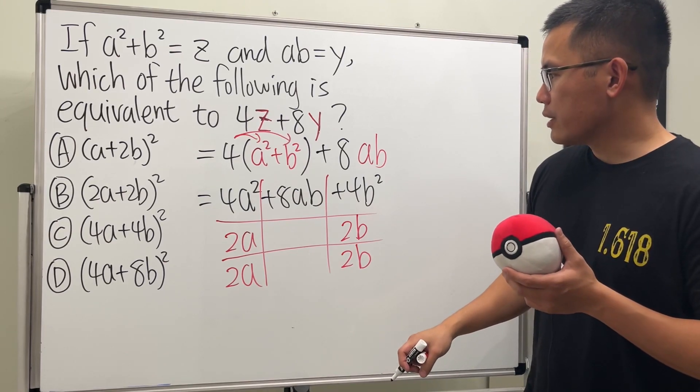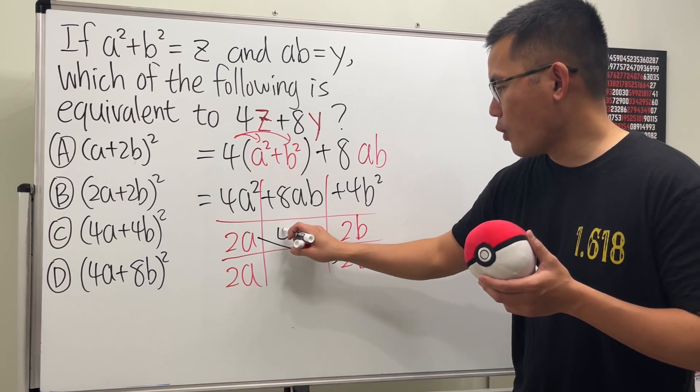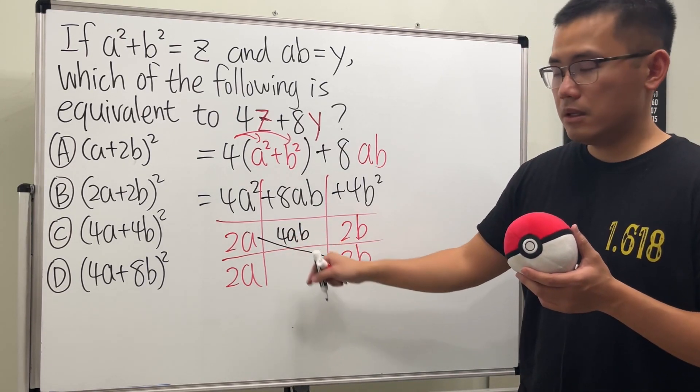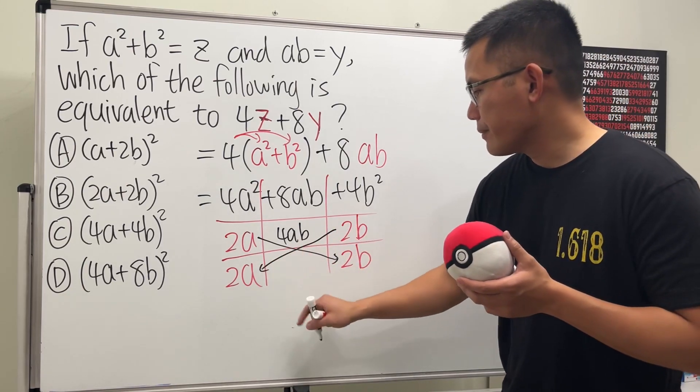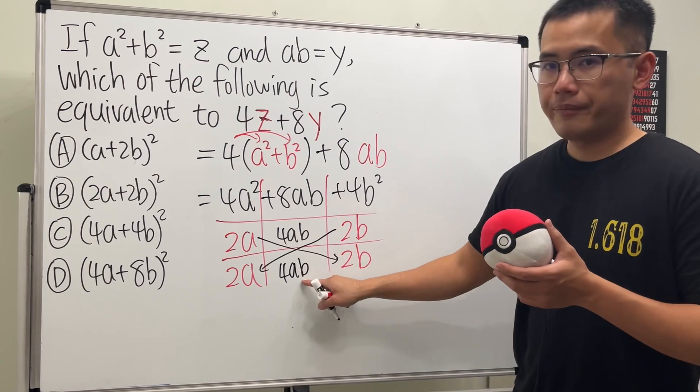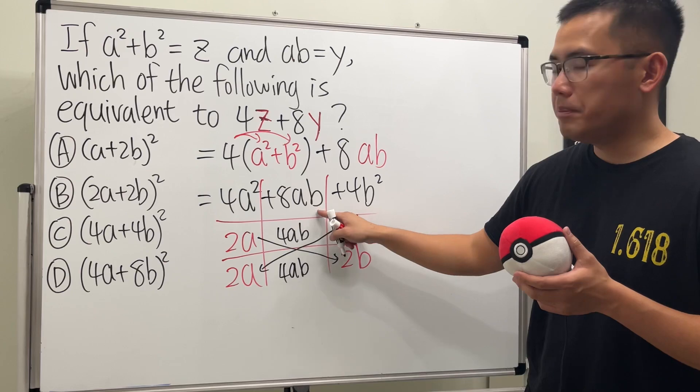When we do this, this times this is going to give us 4ab. Right, 2a times 2b is 4ab. And then if we do this times that, 2a times 2b again is 4ab. Together, when we add them up, that gives us plus 8ab.